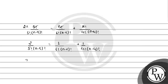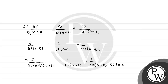अब हम इसको further expand करते हैं। यह हमारे पास होगा 2 upon 5 factorial, जिसे हम लिख सकते हैं (N minus 5) into (N minus 6) factorial। Equal to 1 upon 6 factorial into (N minus 6) factorial, plus 1 upon 4 factorial, और इसको हम लिख सकते हैं (N minus 4) into (N minus 5) into (N minus 6) factorial। Denominator में दोनों साइड में (N minus 6) factorial common है।